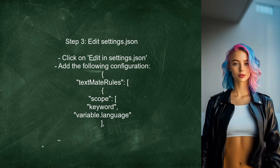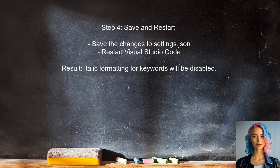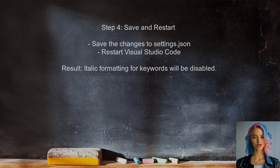After locating the setting, add a configuration to disable the italic style. You can do this by clicking on 'Edit in settings.json'. Finally, save the changes and restart Visual Studio Code to apply the new settings. This will remove the italic formatting from the specified keywords.